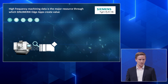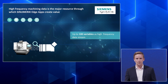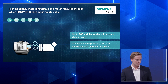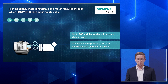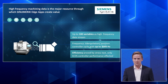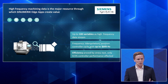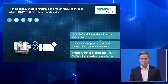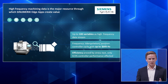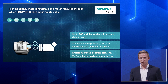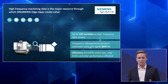Sinumerik Edge offers data access to 100 high-frequency variables. You can get up to 1,000 values per second because it captures data in the interpolation and position controller cycle. In a stress test with one of our aerospace customers, only 0.5% of the controller performance was affected when capturing the maximum amount of data — 90 high-frequency variables plus 42 low-frequency variables at the highest possible frequency.